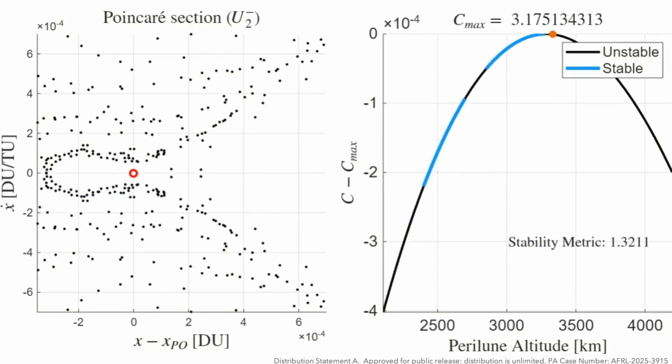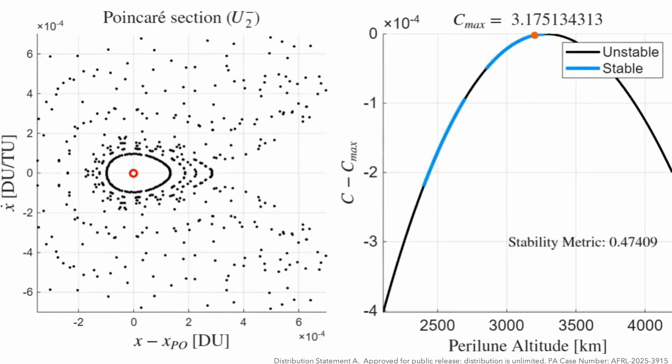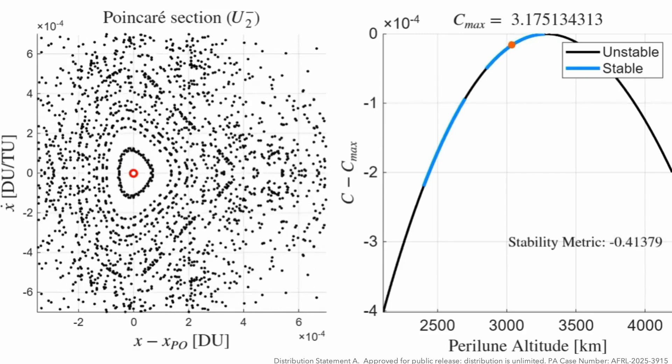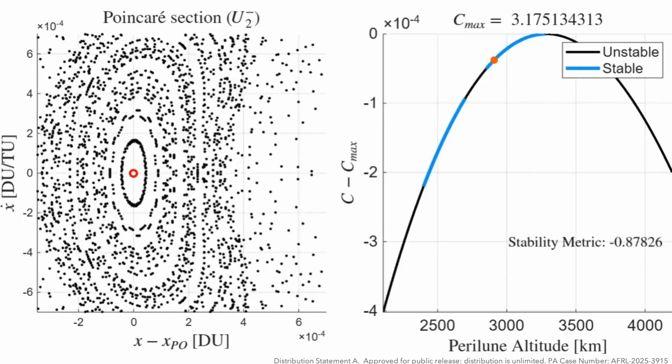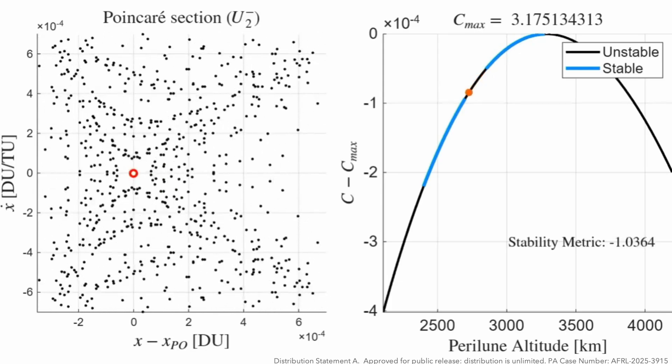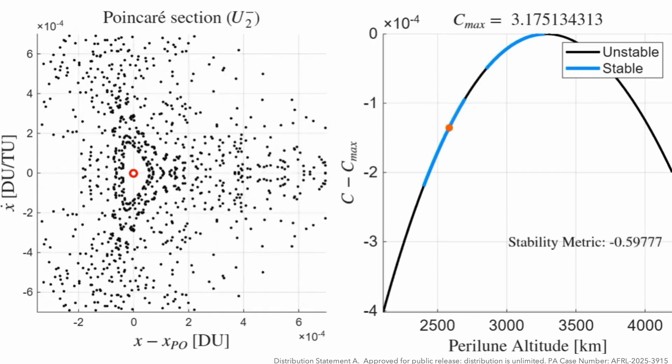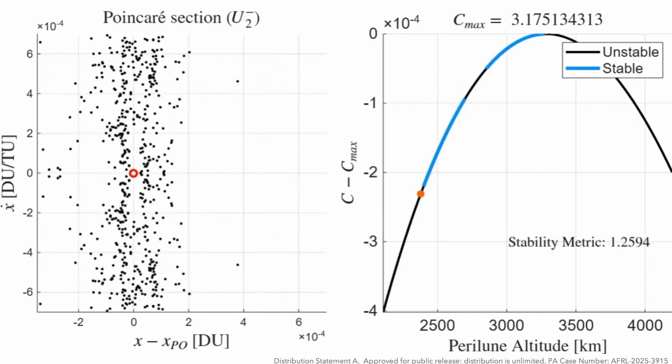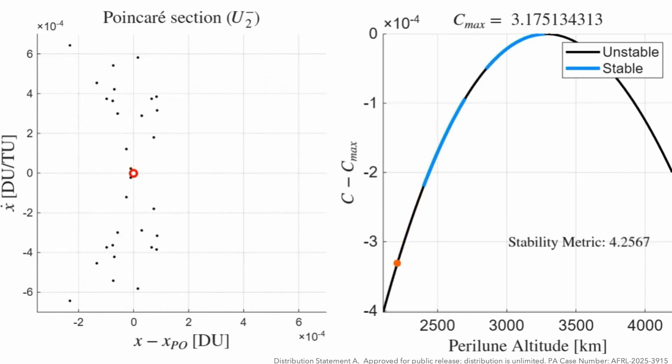Let's take a closer look. On the right, I'm showing the perilune altitude and the Jacobi constant with the two stable windows. This is showing the family. The orange dot labels the point we are on the family. And on the left, I'm showing a Poincaré section near the periodic orbit. As we enter the stable region, you'll notice these stable tori that show up, which actually provide a stability basin. Now we leave and go into the unstable region. Once we enter the second stable window, again you see these stable tori.